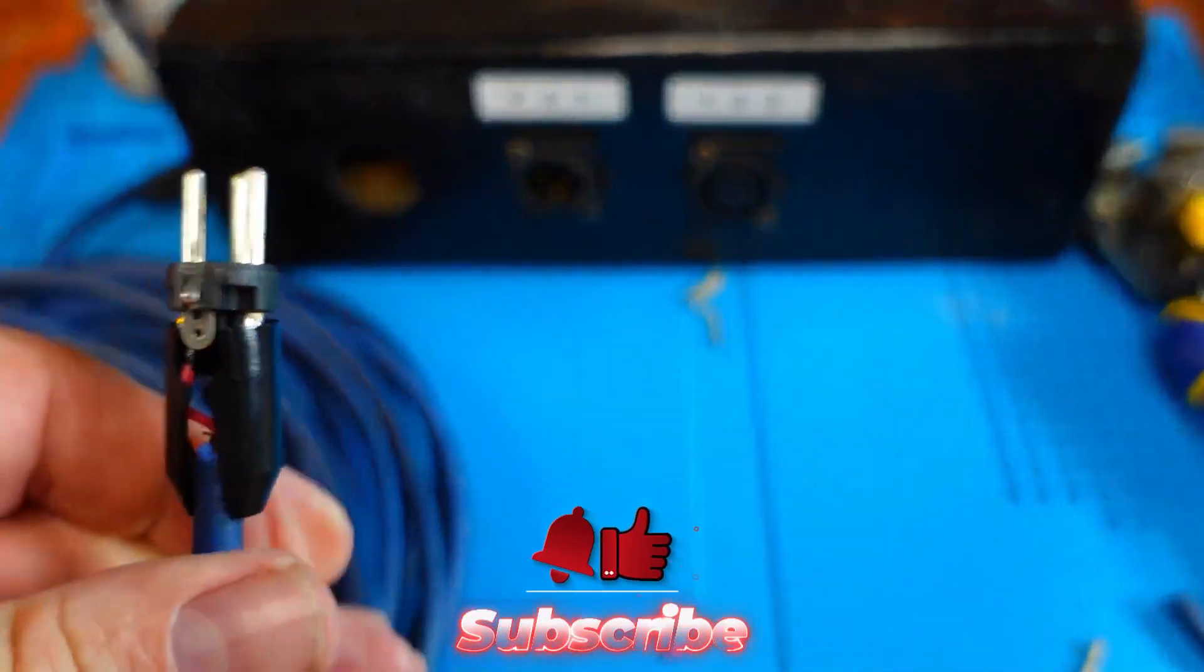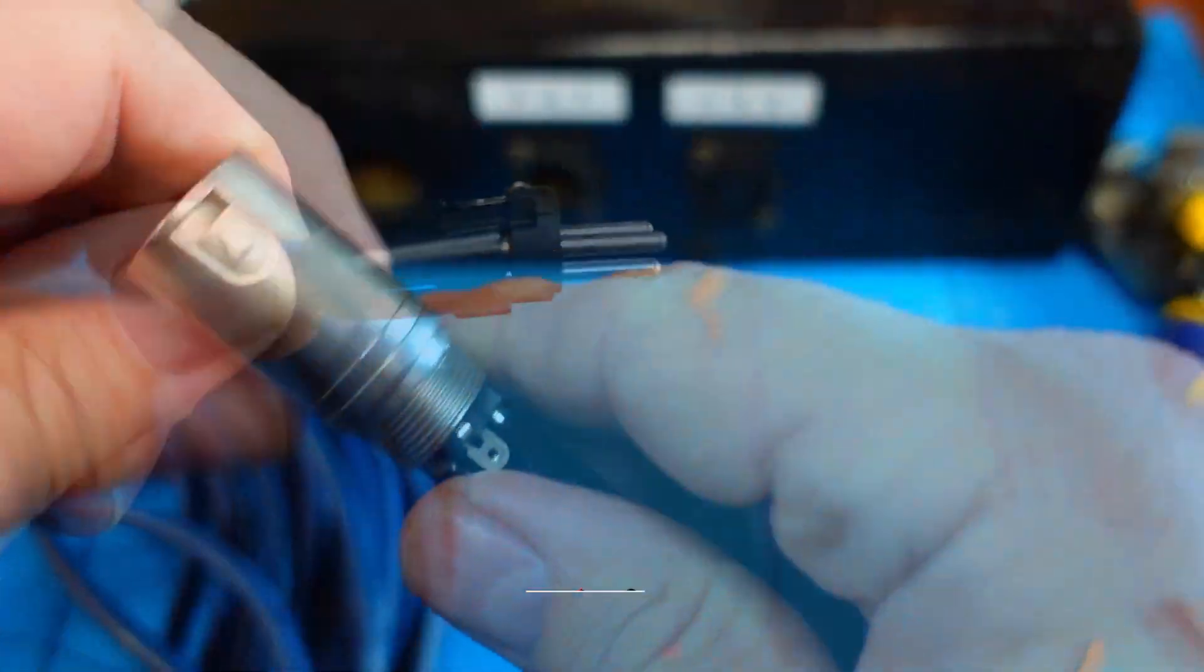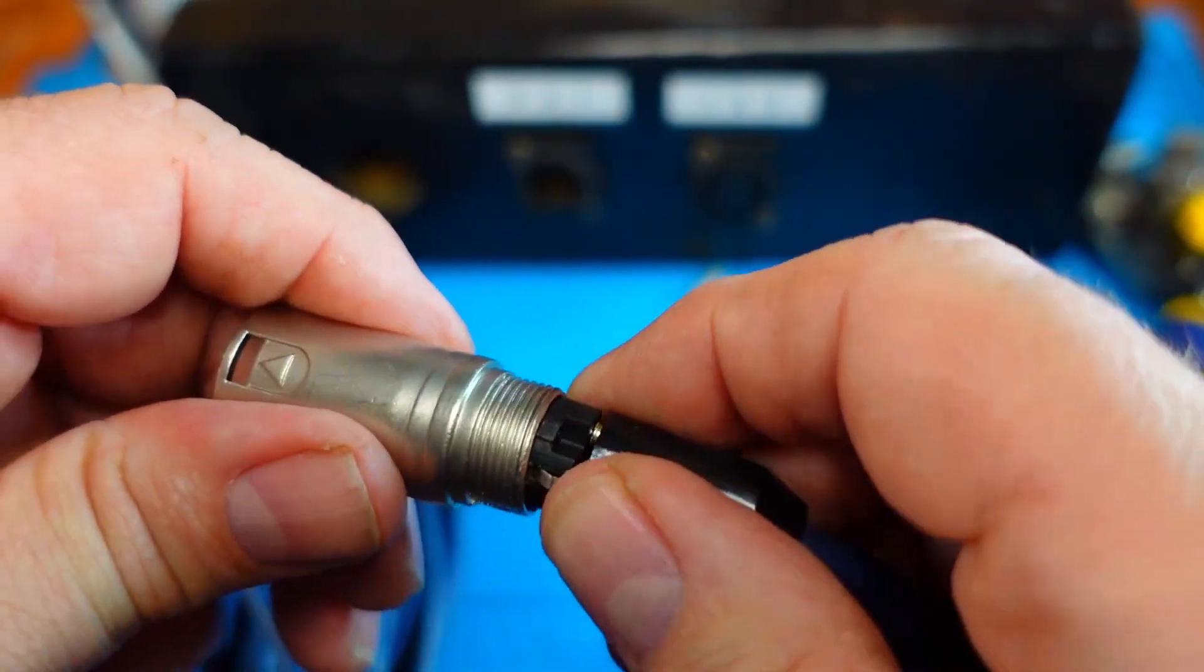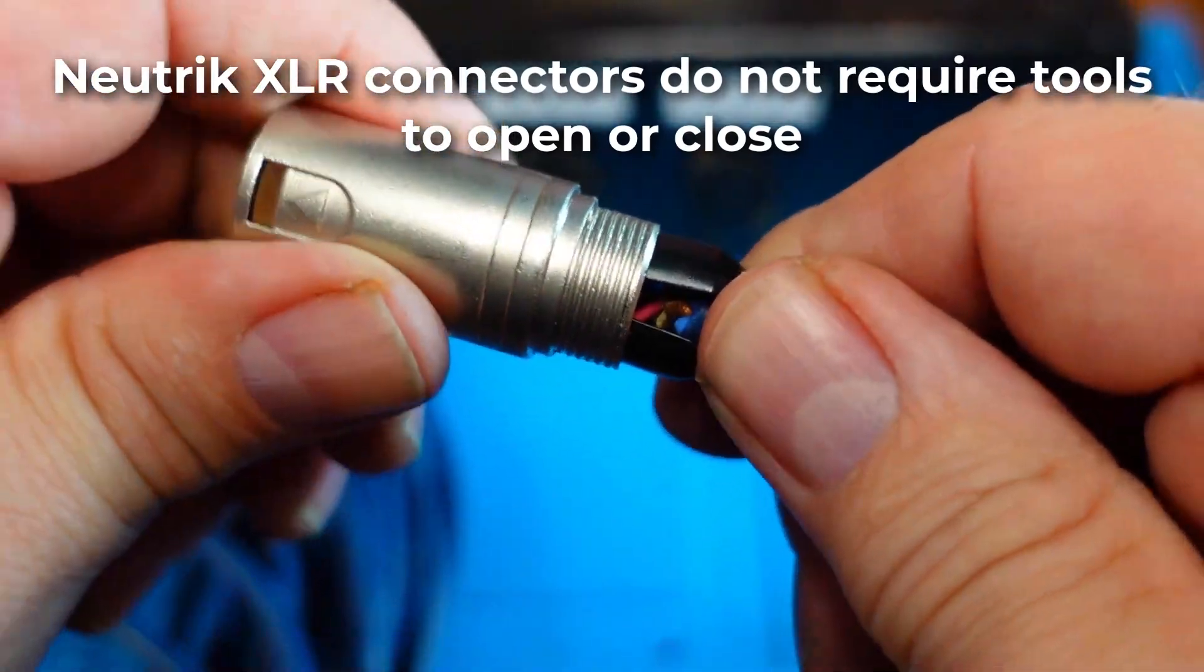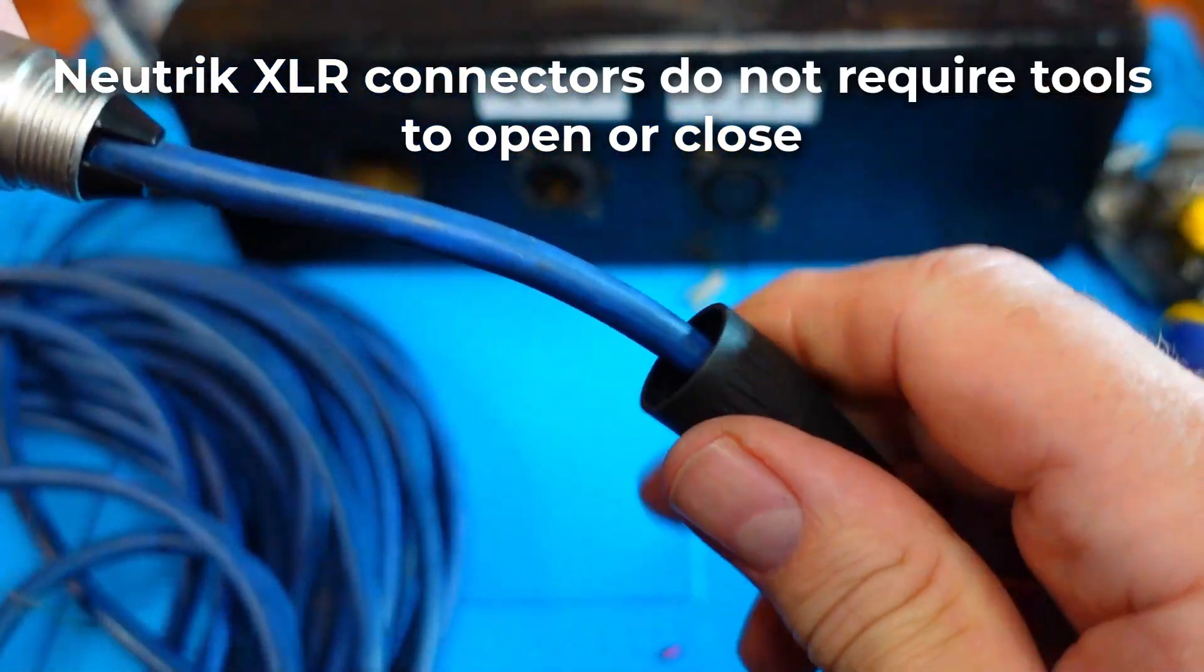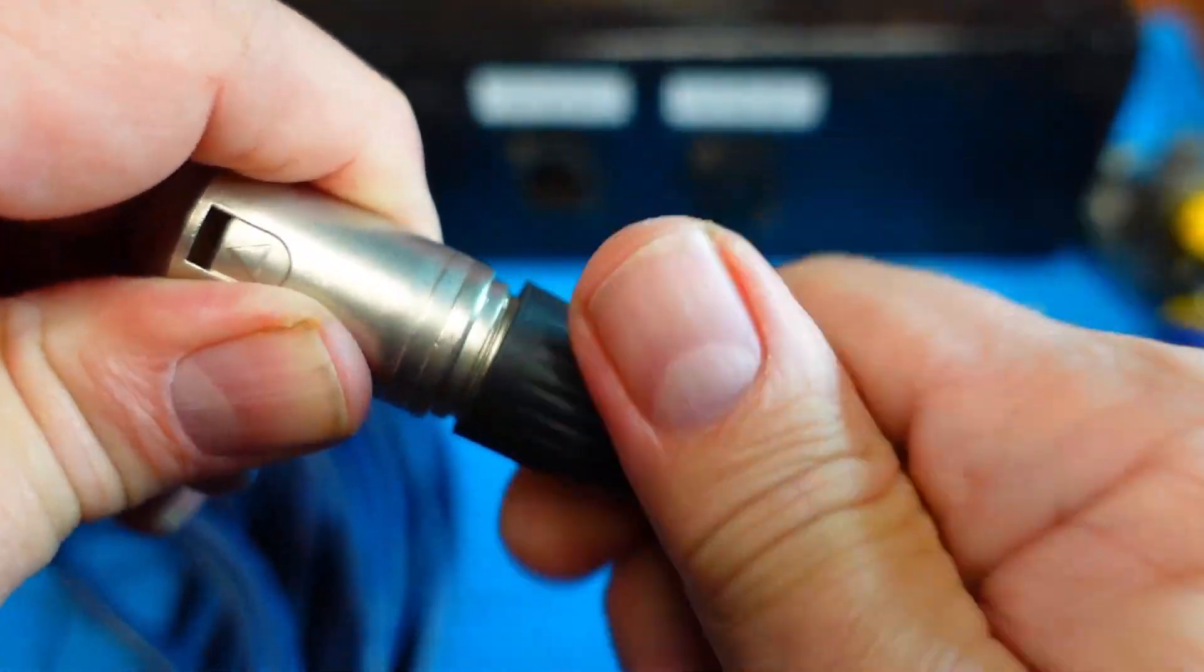Once everything is soldered, you can go ahead and put the cable ends back on. Once you have the cable put back together, always check your work with a multimeter or a cable tester like this.